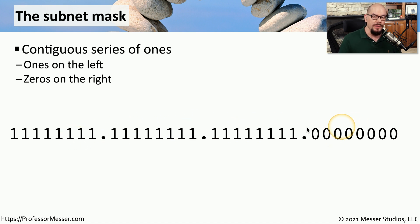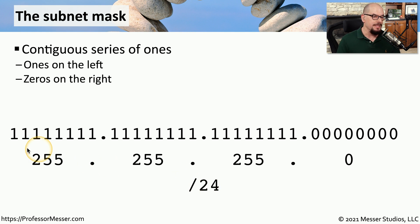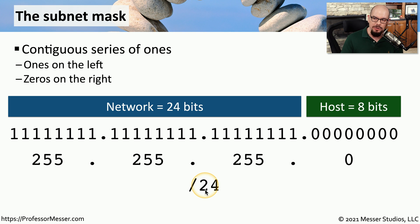If you were to convert this binary value into decimal values, you'll find that this subnet mask is also 255.255.255.0 in decimal. You can also use a shortcut to describe this subnet mask by counting up the number of 1s and putting that right after a slash value, so this subnet mask would also be referred to as a slash 24. We refer to this shortcut as CIDR block notation — that's CIDR, which stands for classless inter-domain routing. You might also hear this referred to as CIDR block notation, slash notation, or prefix notation.